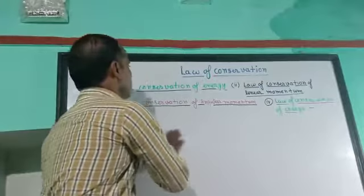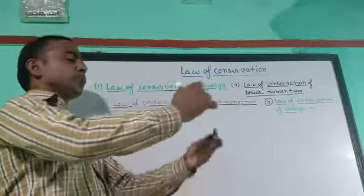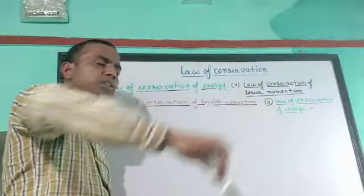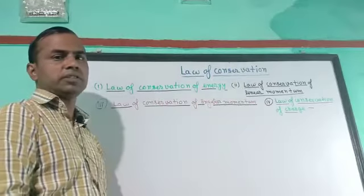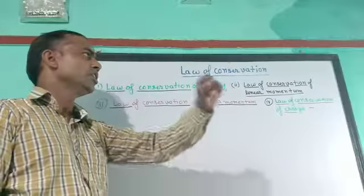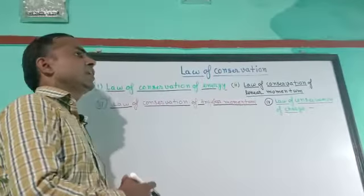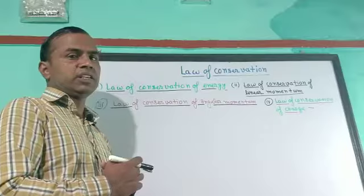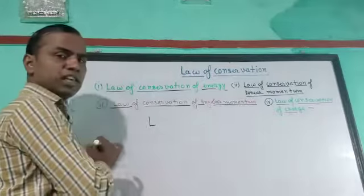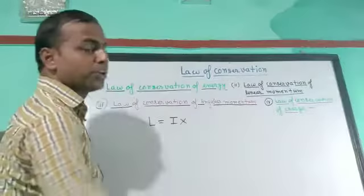The third is the law of conservation of angular momentum. When any body rotates around a fixed axis, it has a moment of inertia. Angular momentum L equals moment of inertia I into angular velocity omega — L = Iω.